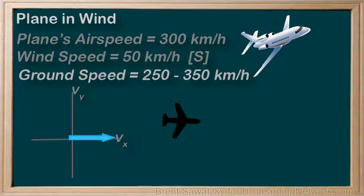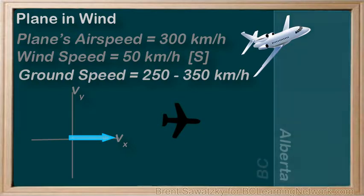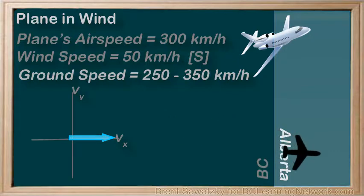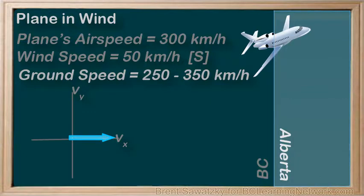Thus, if you wanted to head for a border over here as fast as you could — not caring about where along the border you crossed — you would want your Vx component to be a maximum. Sure, you'd end up being dragged south by the wind and cross the border somewhere down there, but your easterly motion would be a maximum.